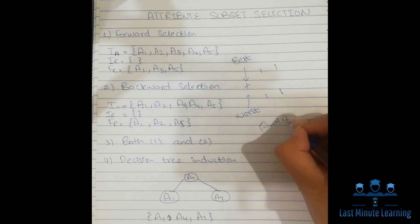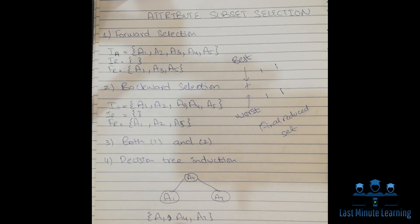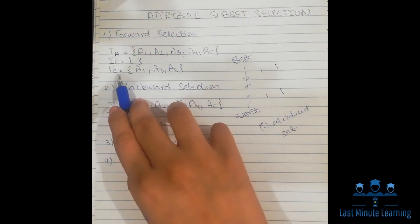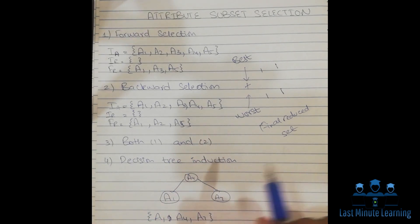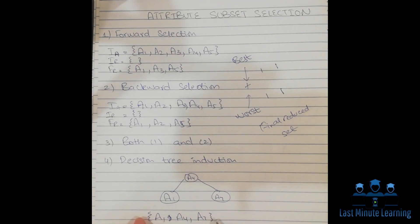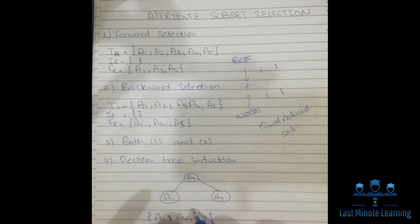The fourth step is decision tree induction. This tree shows the best attributes — in this case it gives us the final reduced set. The decision tree induction method shows the final reduced set: those attributes which are the best from the initial level selection, giving us the final answer.